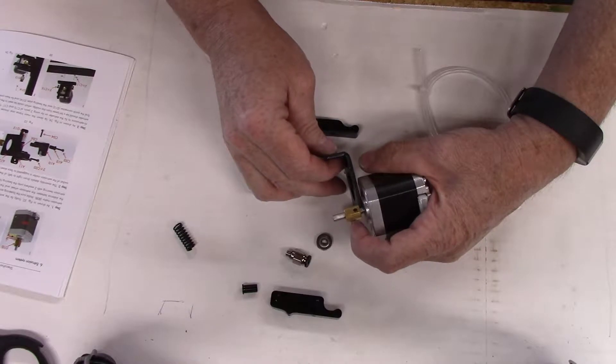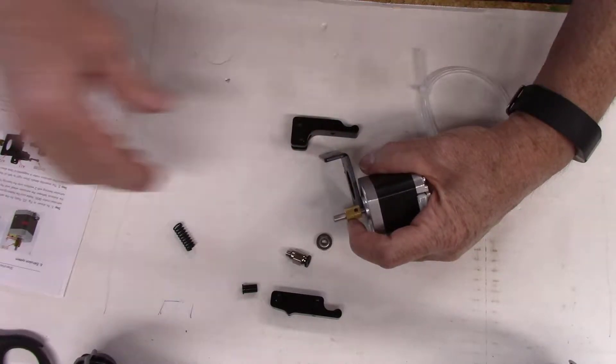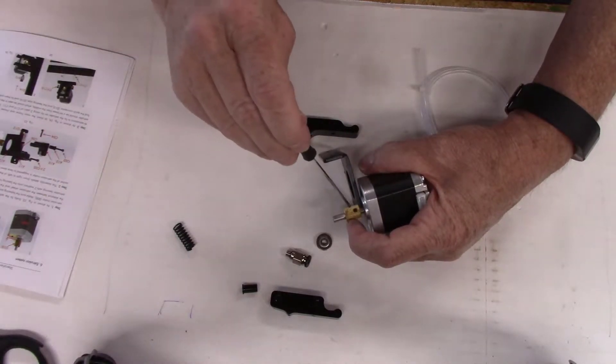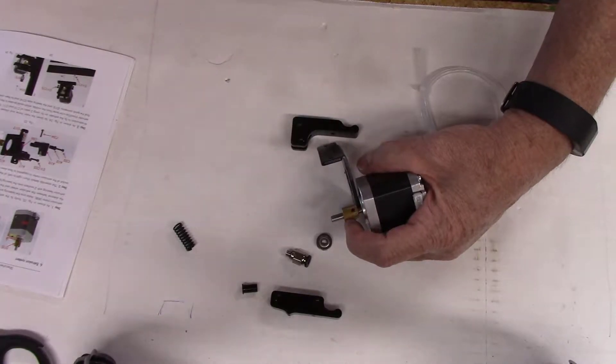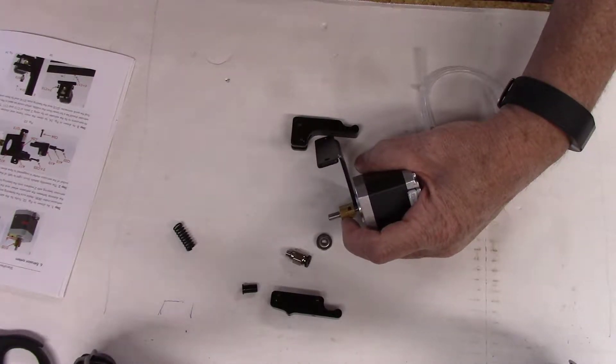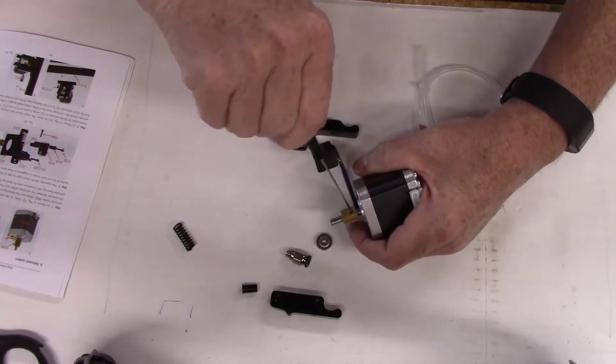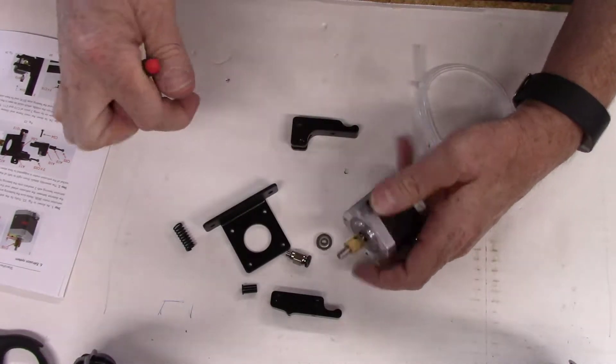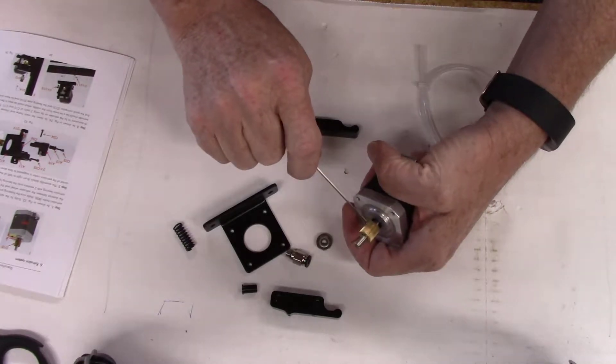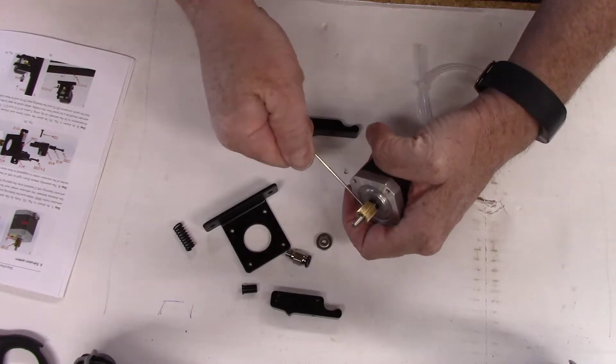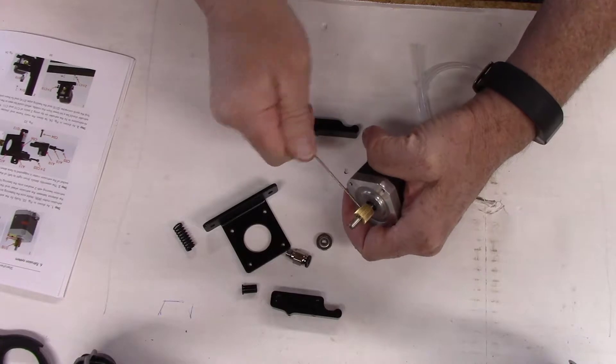I'm just going to use the back plate and slide that up so that it's about that far away, and then I'm going to take my ball driver and tighten that on here. You don't have to really torque down on it, just get it tight.